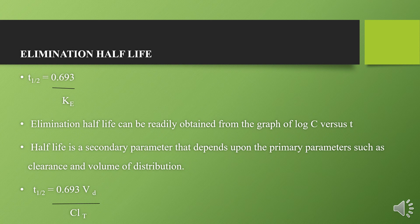After the elimination rate constant, the second parameter is elimination half-life: t₁/₂ = 0.693 / Ke. We can readily obtain this half-life from the log concentration versus time graph. The half-life is a secondary parameter — it depends on other parameters like protein binding events and volume of distribution. An alternative expression is: t₁/₂ = (0.693 × Vd) / CLt.